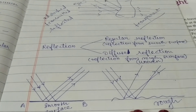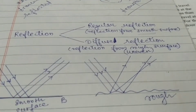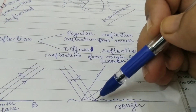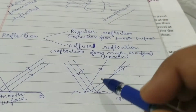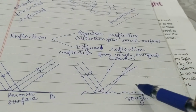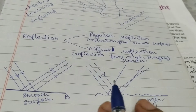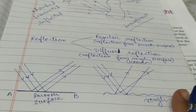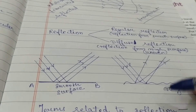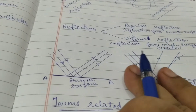Now looking at the rough surface diagram: parallel light rays fall on it, but after reflection they all go in different directions. So diffuse reflection won't produce a clear image, and no one will be able to see any image from a rough surface. These diagrams are in your book as well.